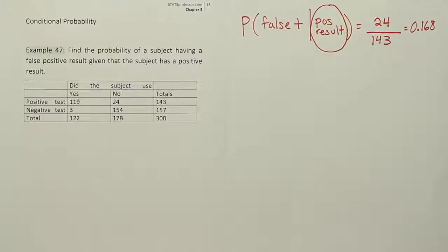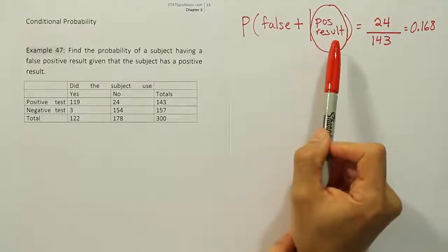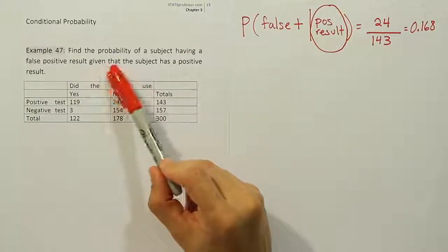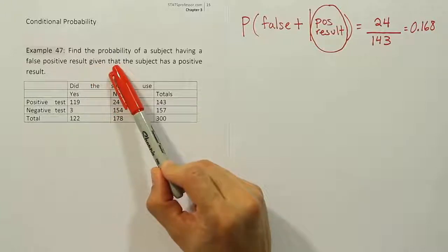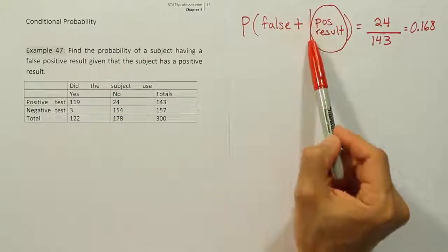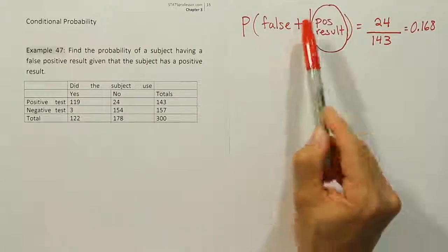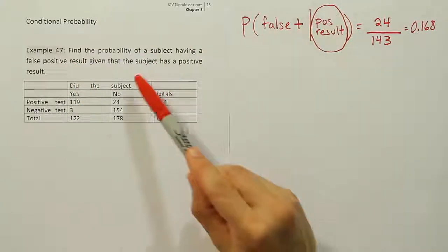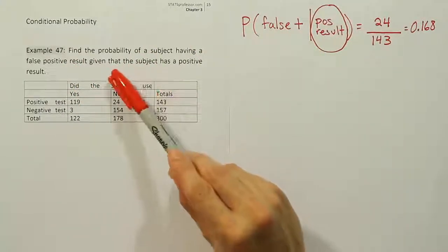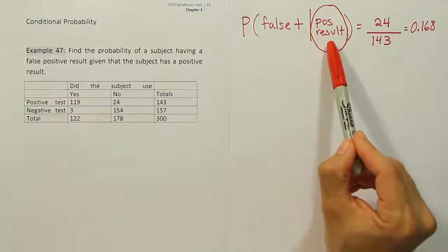Alright, so that was the shortcut method, and that's the best way to do the problem. Again, the way we did that is we followed the phrase, given that. What comes after the phrase, given that, is what we put after the line. So it's going to be false positive, given that, and then we follow what follows that. So given that, the subject has a positive result, so positive results.